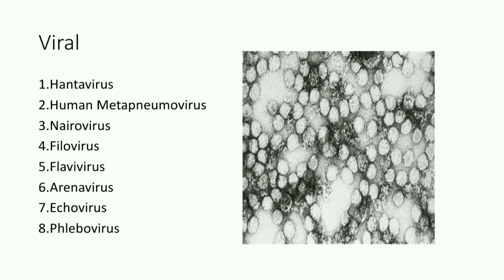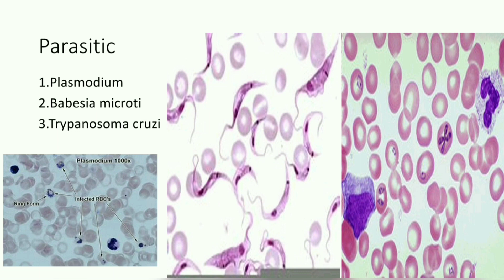The viral causes of relative bradycardia are Hantavirus, Human metapneumovirus, Nairovirus, Filovirus, Flavivirus, Arenavirus, Echovirus, and Phlebovirus. The parasitic causes are three in number: Plasmodium, Babesia microti, and Trypanosoma cruzi. The image in the lower left shows a peripheral blood smear of an individual with malaria, where infected RBCs show the ring form of Plasmodium. The second image shows a peripheral blood smear with Trypanosoma cruzi in Chagas disease. The third image shows the Maltese cross pattern of Babesia.